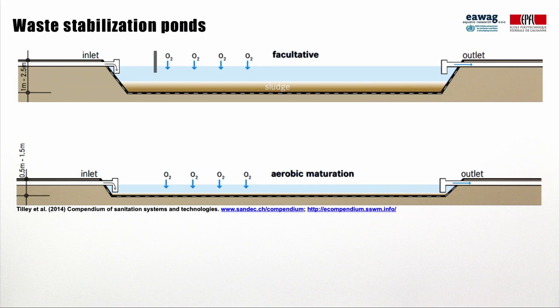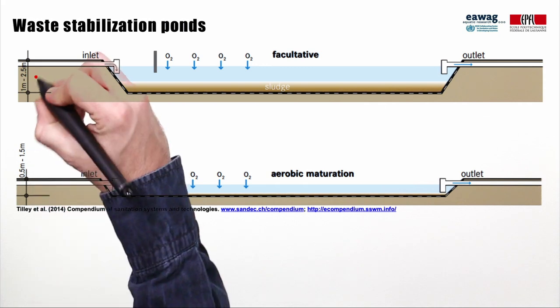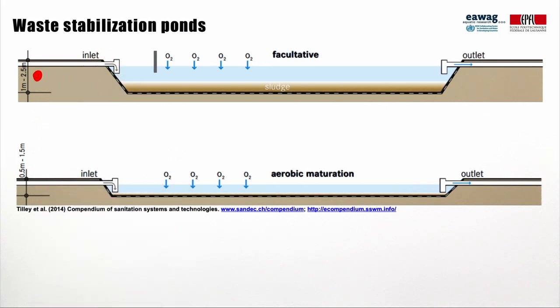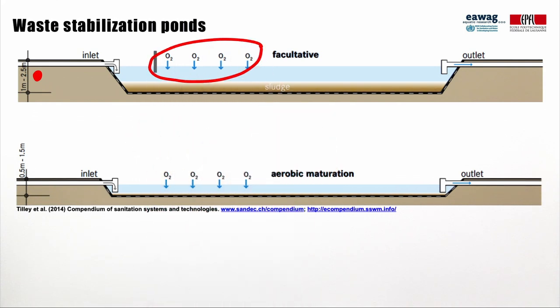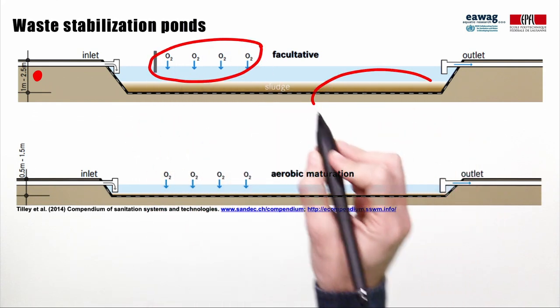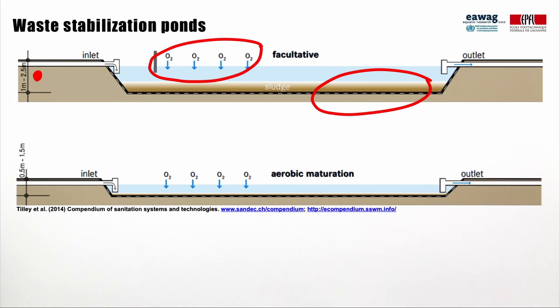Waste stabilization ponds, also called lagoons, treat effluents in large engineered lined basins. Facultative ponds used at Demagete following solid-liquid separation have a depth of 1 to 2.5 meters and are designed for removal of dissolved and suspended organics. They are called facultative ponds because the ponds are stratified into a top layer, which is predominantly aerobic, and a bottom layer, which is predominantly anaerobic — meaning it has no oxygen.